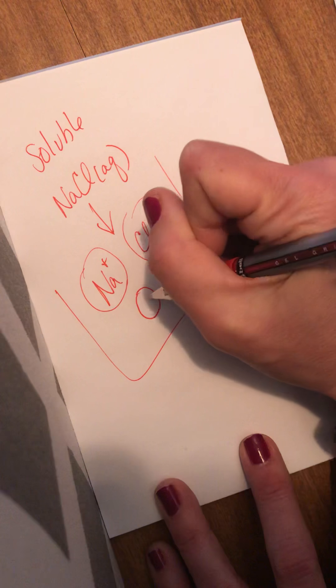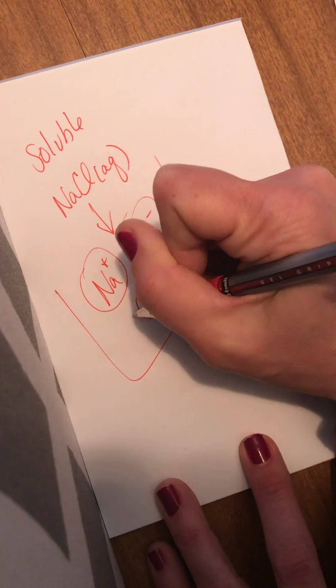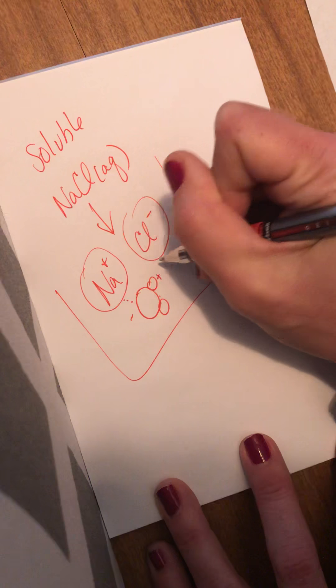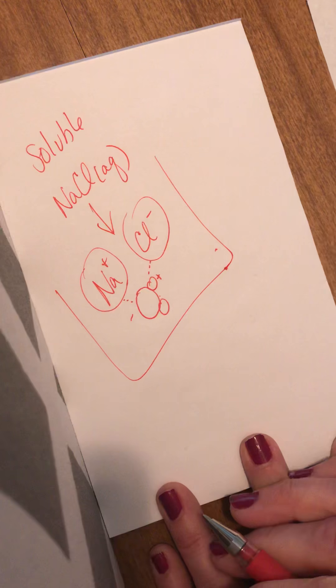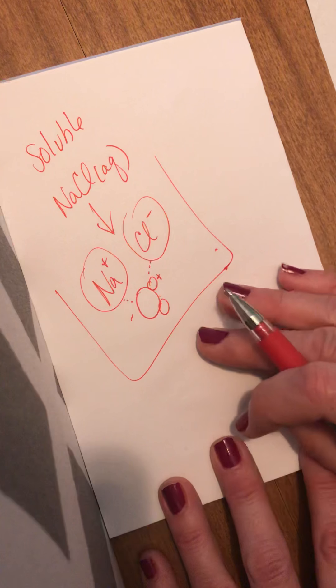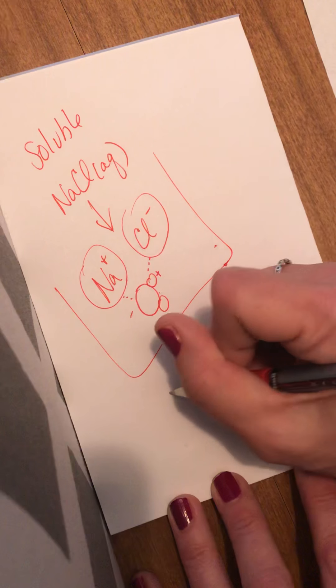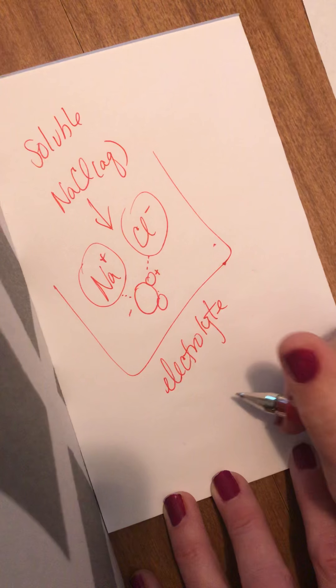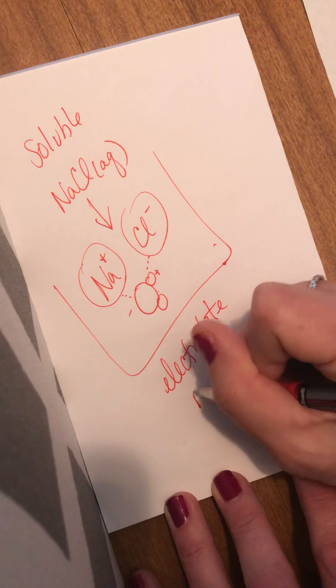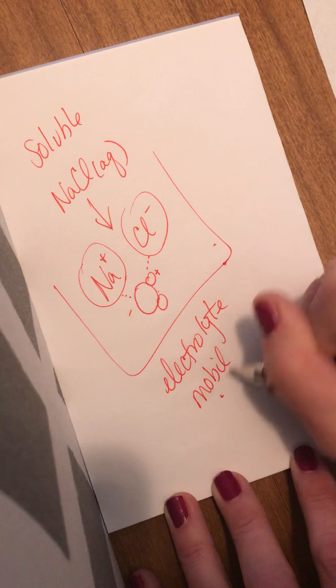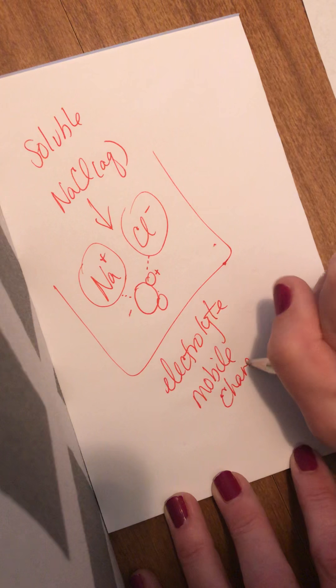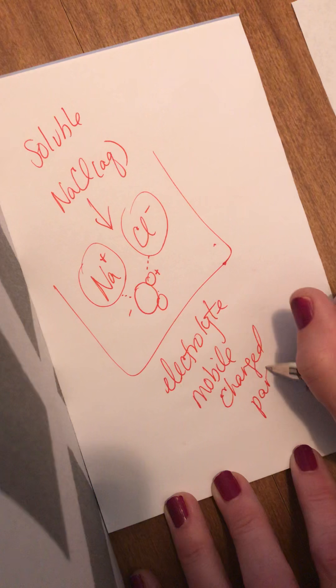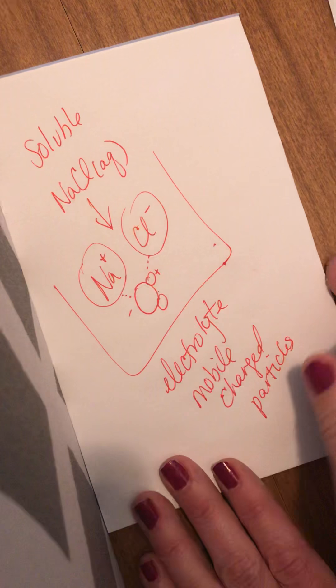If I had a water molecule, the O side of the water is negative so it would be attracted to the Na, and the H side of the molecule is positive and that would be attracted to the Cl. So these charges in here make this a great electrolyte, which means it's able to conduct electricity because there are mobile charged particles.